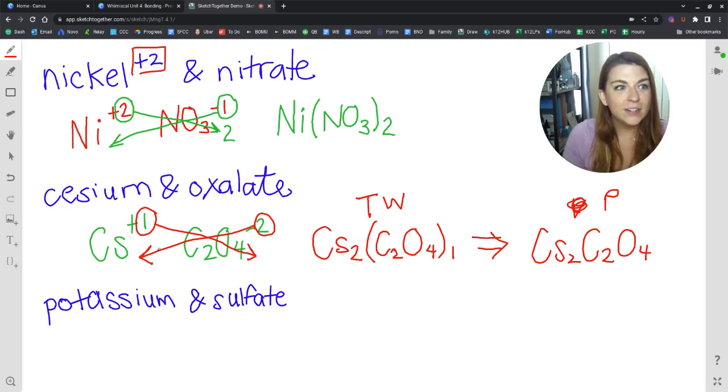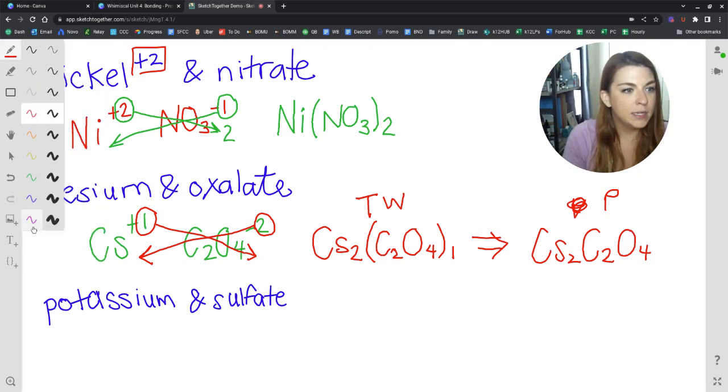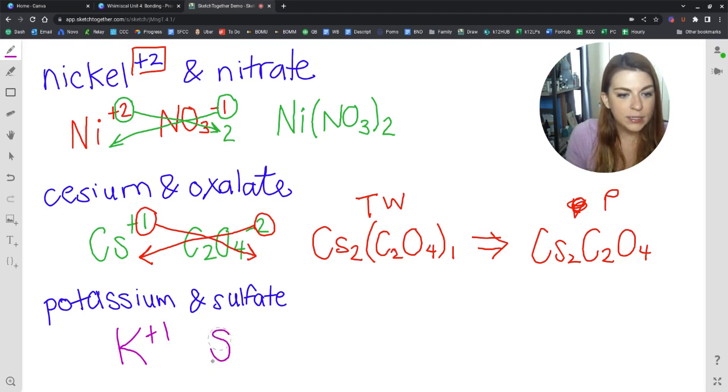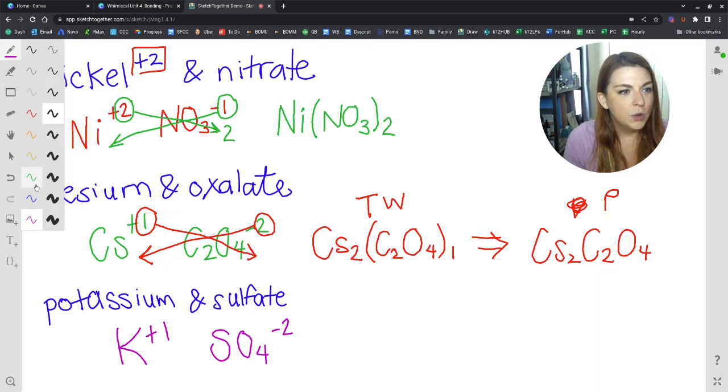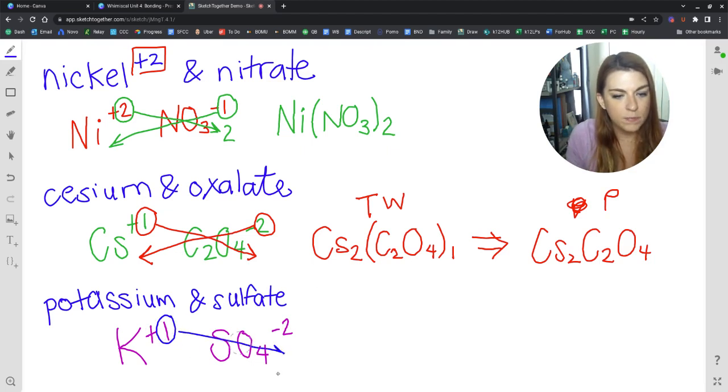Final example is potassium bonding with sulfate. So potassium is also a member of group 1, just like cesium. So it'll have a +1 charge. And then the sulfate ion is SO4 with a -2 charge. Some of the polys you will find yourself memorizing on purpose and others you'll find yourself memorizing accidentally just because you use them so often. So after the charges are listed, we can crisscross them.